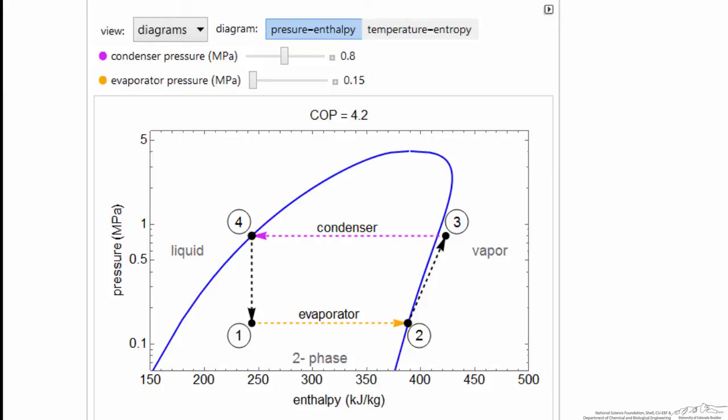But lowering the pressure also lowers the temperature to maintain vapor-liquid equilibrium. We have a large fraction that can evaporate, so now we have a vapor-liquid mixture and we can complete the cycle.